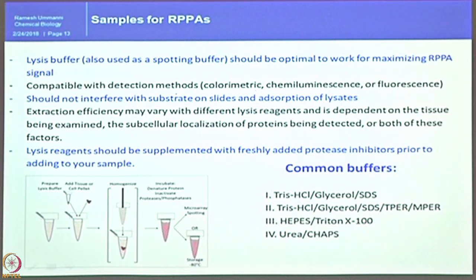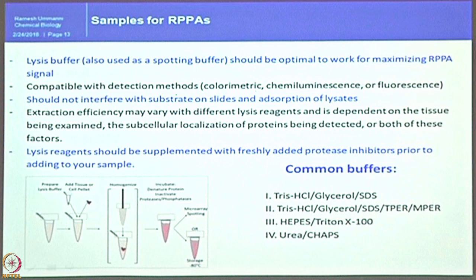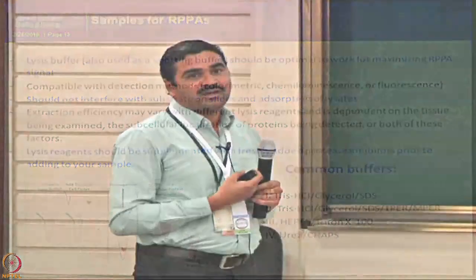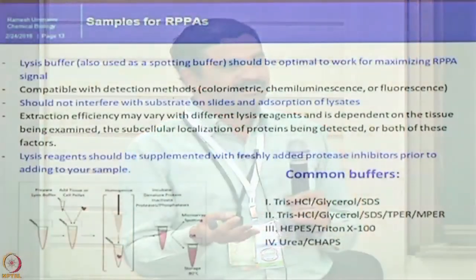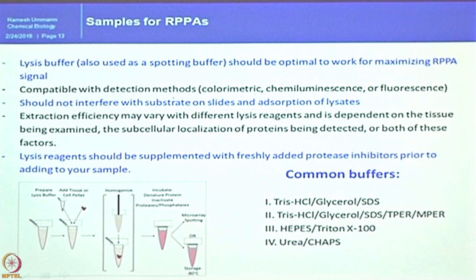One critical point is the choice of buffer. Not all proteins in all samples can be solubilized by a single buffer — this is a major limitation in the array approach. The lysis buffer should be optimal to maximize the RPPA signal. It should not interfere with signal visualization using any labeling system, whether secondary antibodies with IR labeling, HRP label, alkaline phosphatase label, or direct Cy3 or Cy5 labels, and should be compatible with colorimetric, chemiluminescence, and fluorescence detection methods.